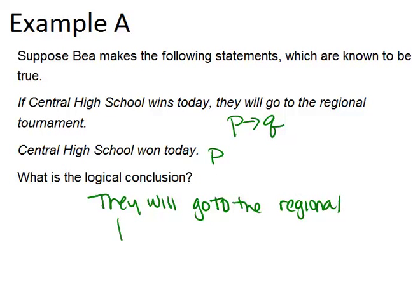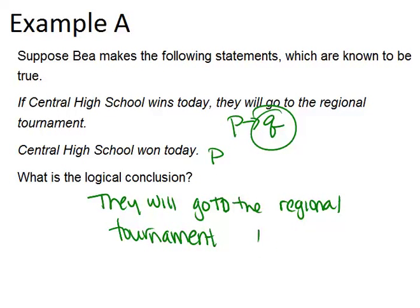This was an example of the law of detachment, because we know if P then Q is true — if they win today, then they go to the regional tournament. And we know P is true, they won. Therefore Q must be true: they will go to the regional tournament. That's the law of detachment.